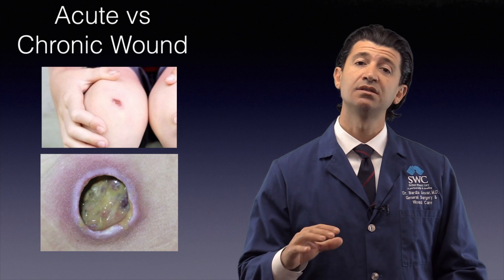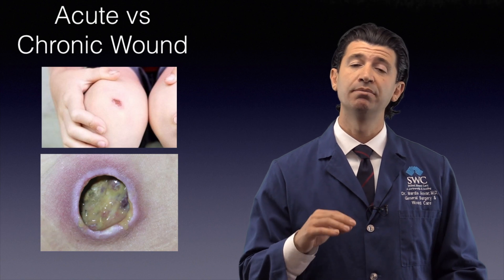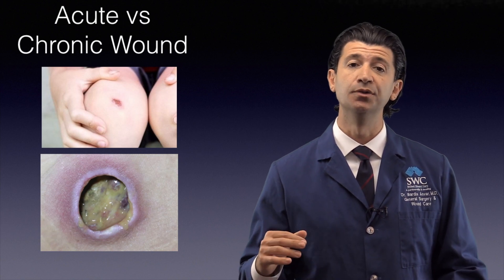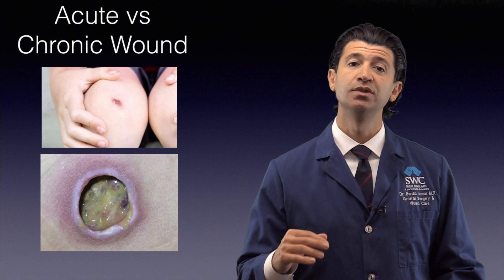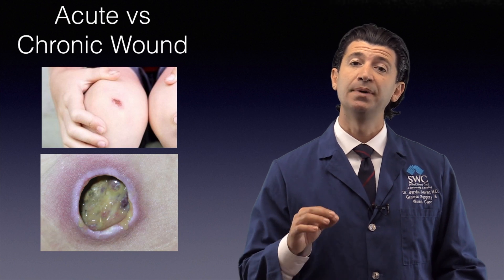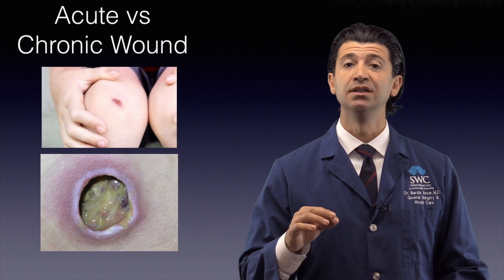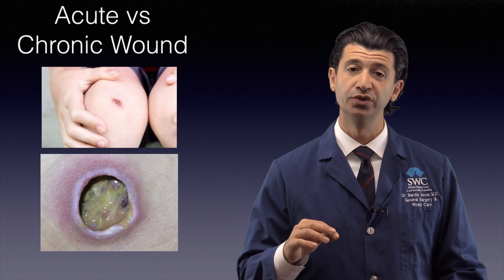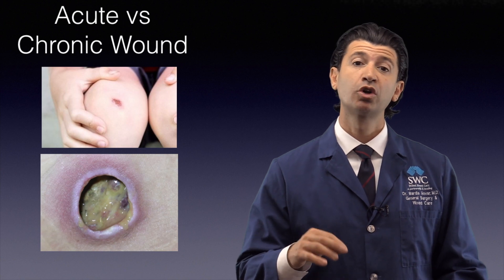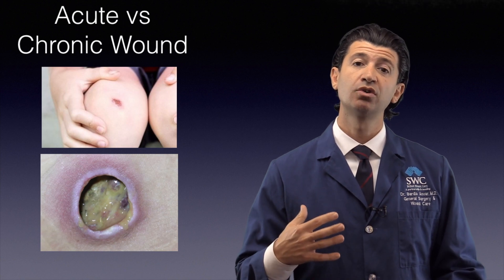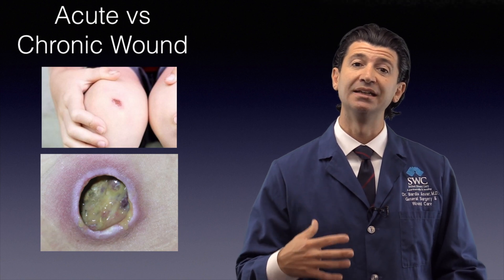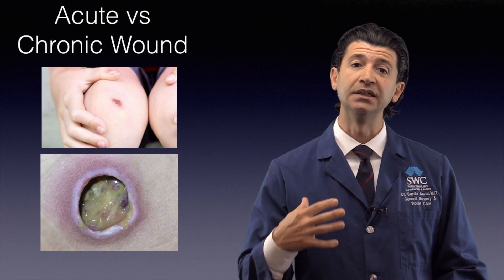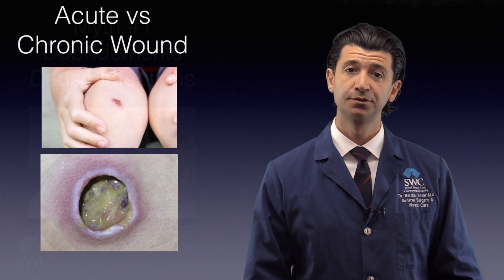In a chronic wound, you can see multiple impediments to wound healing like the wound you see below. In this wound, there is infected tissue. The peri-wound is broken down and both macerated and rolled over, requiring multiple debridements in order for the wound to get into the healing phase and hopefully epithelialize or close.